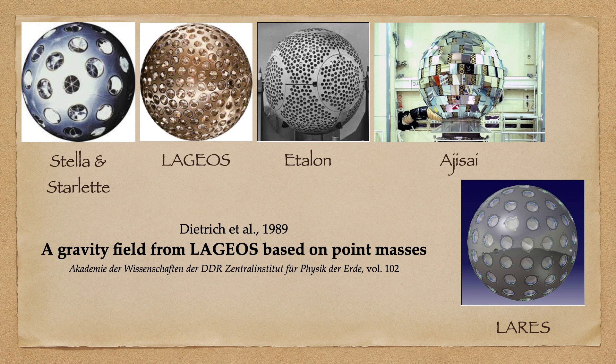In their most basic form, the satellites are simple spheres covered by retro reflectors. Tracking the motion of the satellites using ground-based laser stations allows us to reconstruct the gravitational influence on the satellites through their path.